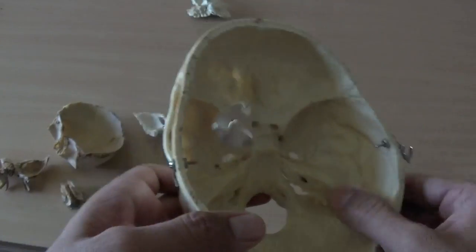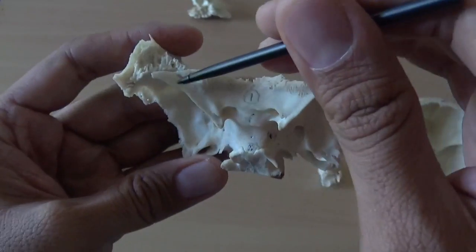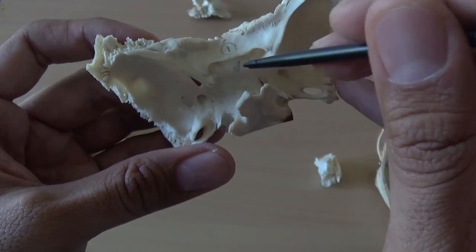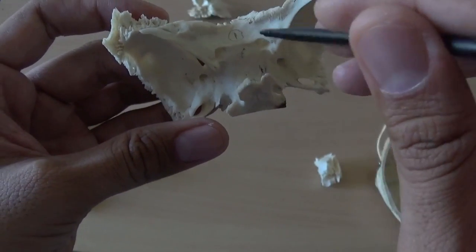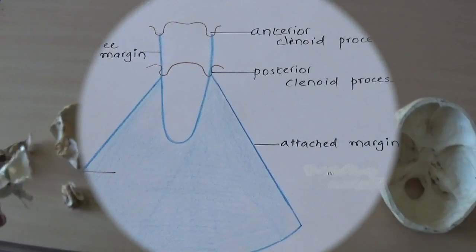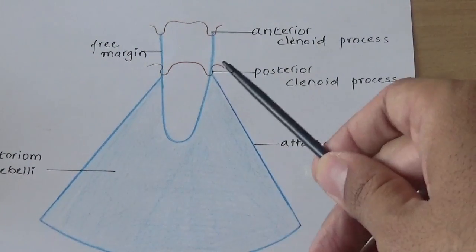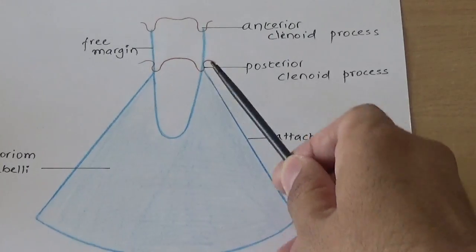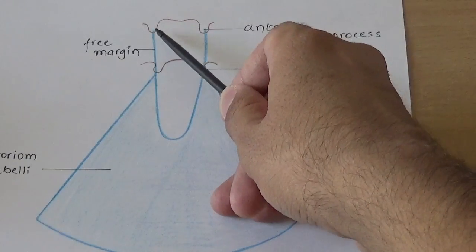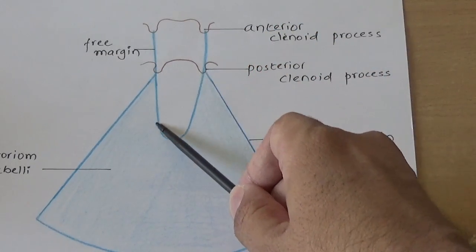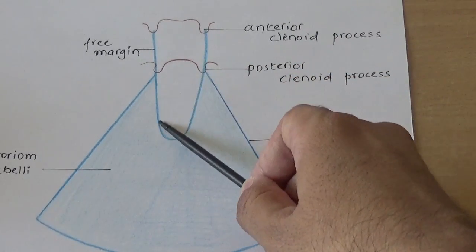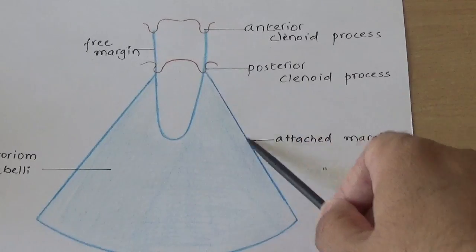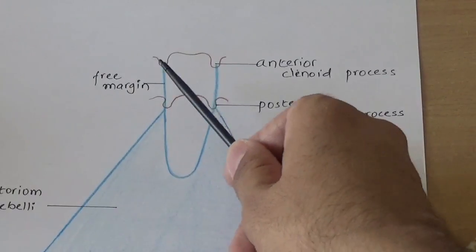These are the lesser wings of sphenoid, and as mentioned, their sharp posterior margin forms the posterior limit of the anterior cranial fossa, ending in the anterior clinoid process. The anterior clinoid processes provide attachment to the free margin of tentorium cerebelli. In the diagram, the blue structure is the tentorium cerebelli — it has an attached margin fixed to the petrous temporal bone, and a U-shaped free margin. The brainstem passes through this U-shaped gap from the middle cranial fossa to the posterior cranial fossa.